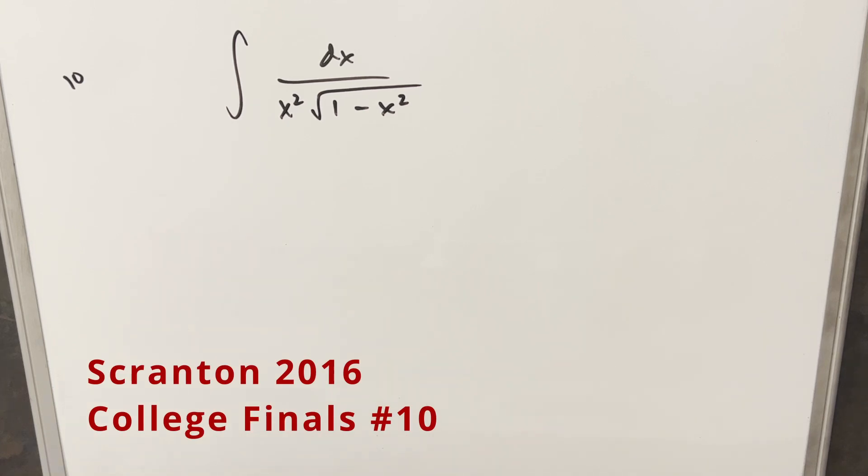Okay, we have a Taylor integral on the board. This one's from the Scranton integration bee, 2016, problem 10. We have the integral of 1 over x squared times square root of 1 minus x squared dx.